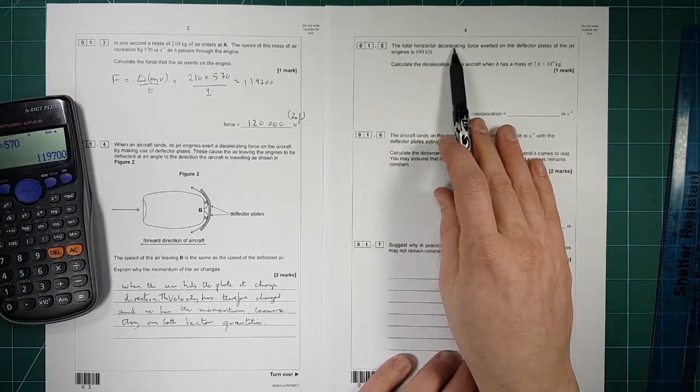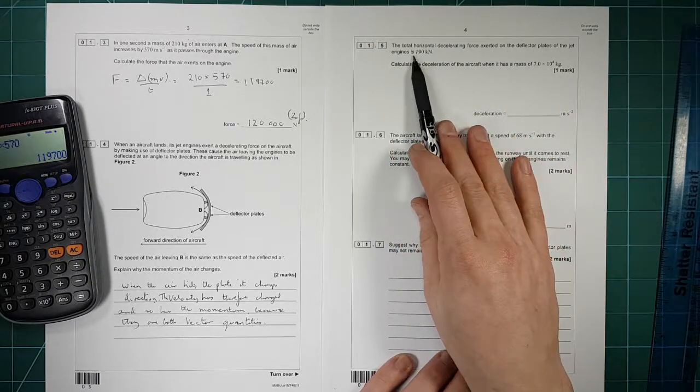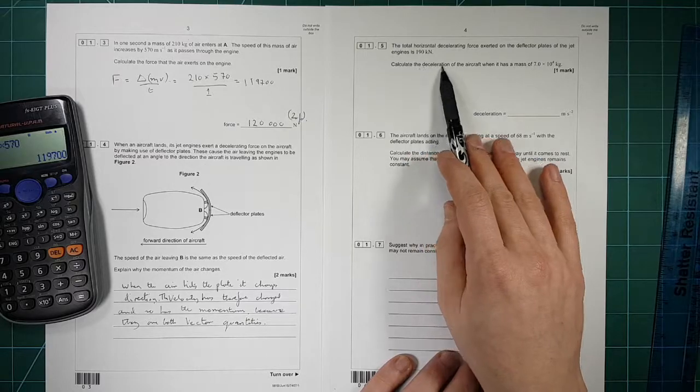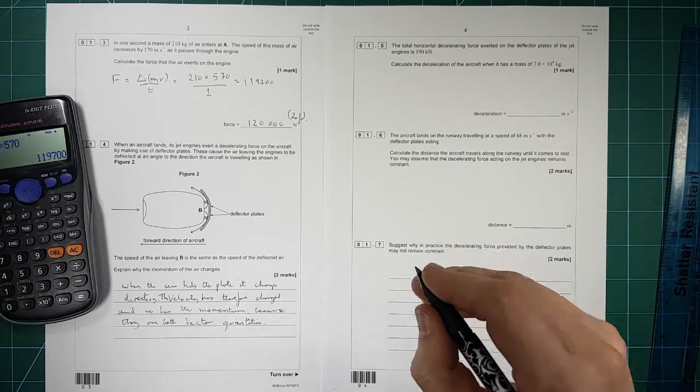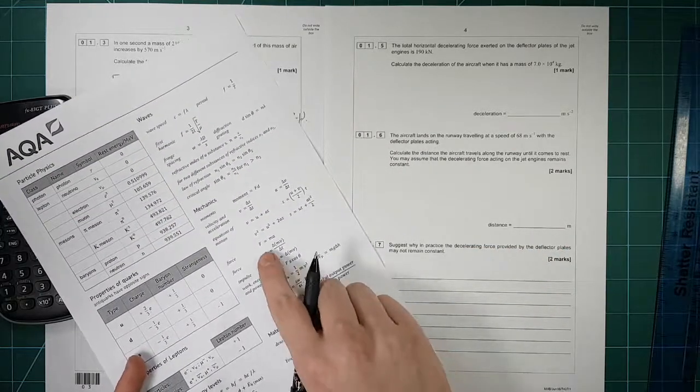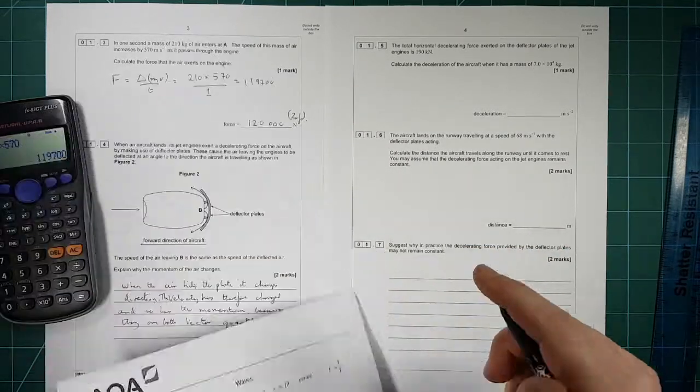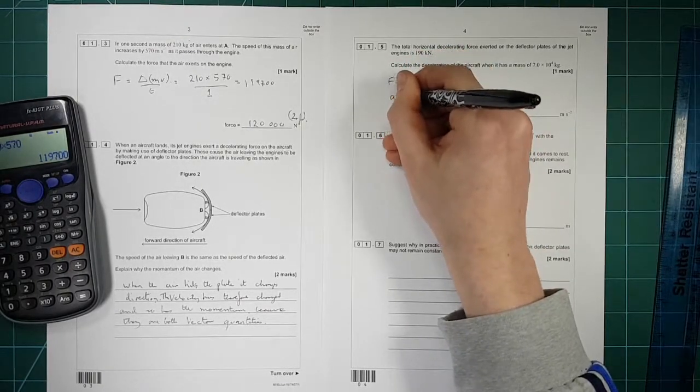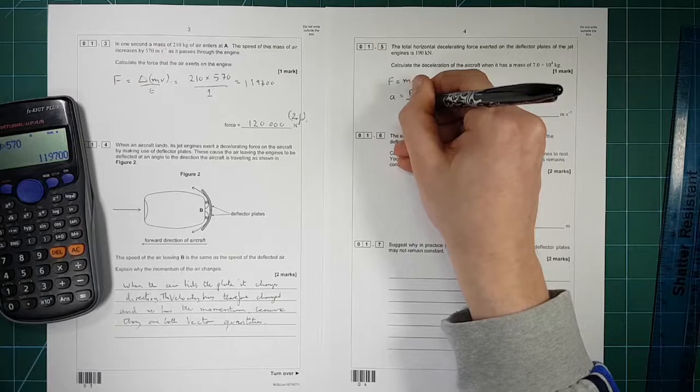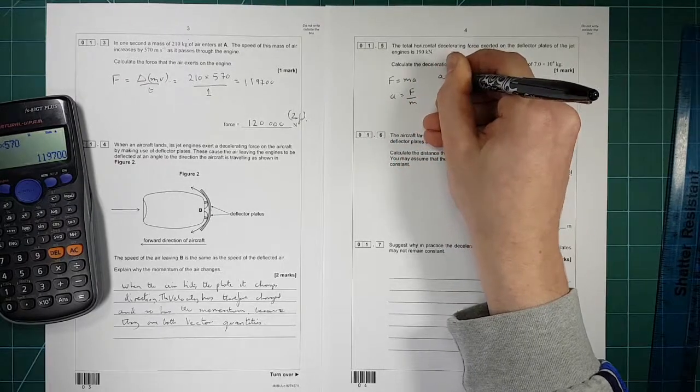Here. The total horizontal decelerating force on the deflector plates of the jet engines is this. Calculate the deceleration of the aircraft. This is very easy. We're just using Newton's second law. The other expression of it here. F equals MA. So F is equal to MA. So A is equal to F divided by M. So A is equal to, well the force is 190 kilonewtons. So times 10 to the 3 divided by the mass which is 7.0 times 10 to the 4.